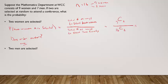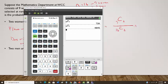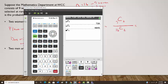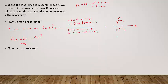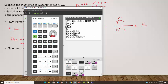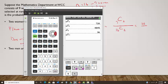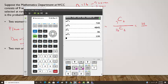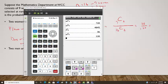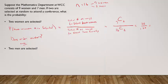So the number of ways to select 2 faculty from 16 is 16 choose 2, and the number of ways to select 2 women from 9 is 9 choose 2. On the TI-84: 9 choose 2 gives 36, and 16 choose 2 gives 120. So 36 divided by 120 equals 0.3 — there's a 30% chance of selecting 2 women.